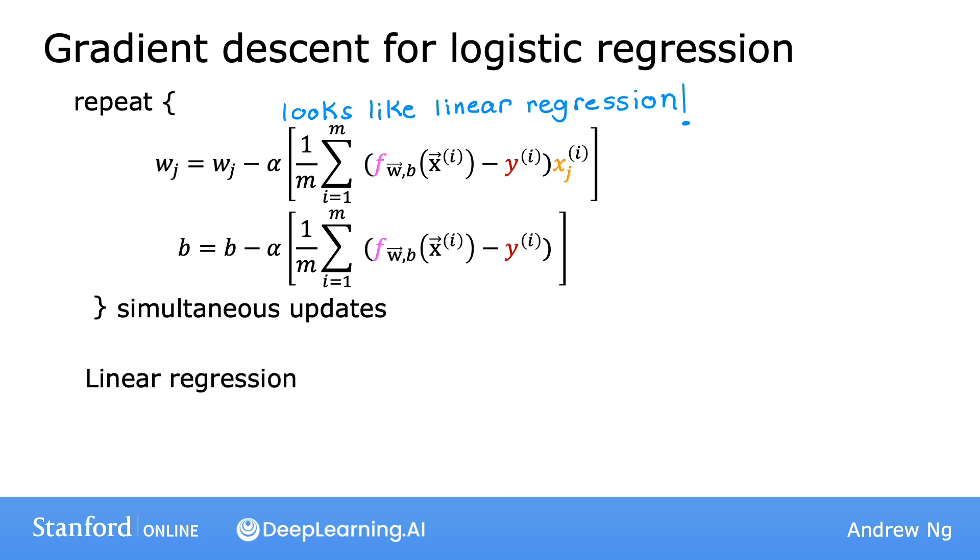In linear regression, f of x is w x plus b, but in logistic regression, f of x is defined to be the sigmoid function applied to w x plus b. So although the algorithm looks the same for both linear regression and logistic regression, actually they're two very different algorithms because the definition for f of x is not the same.